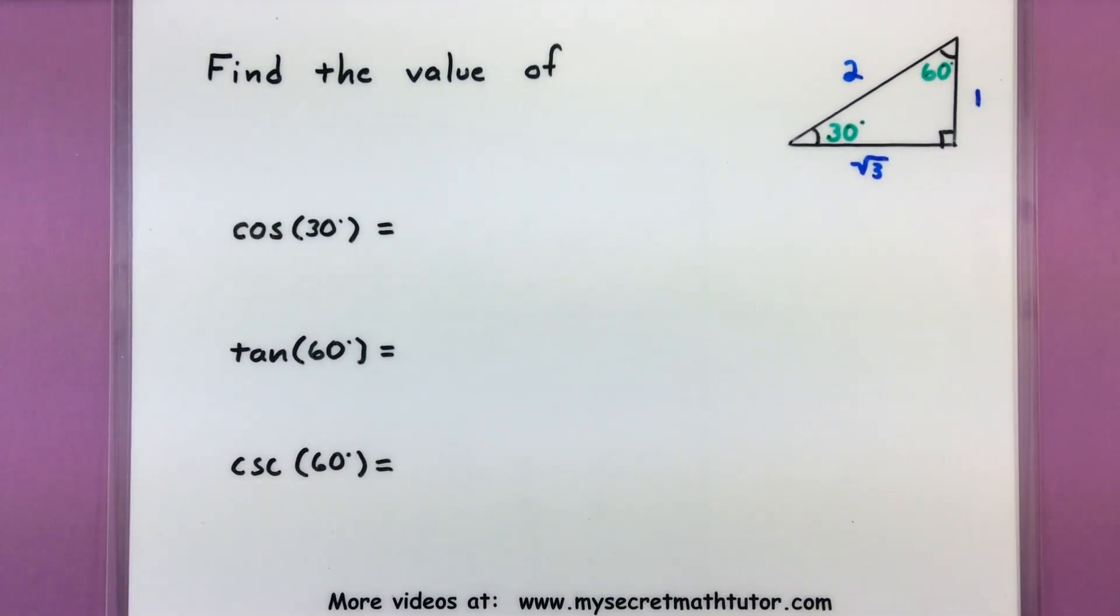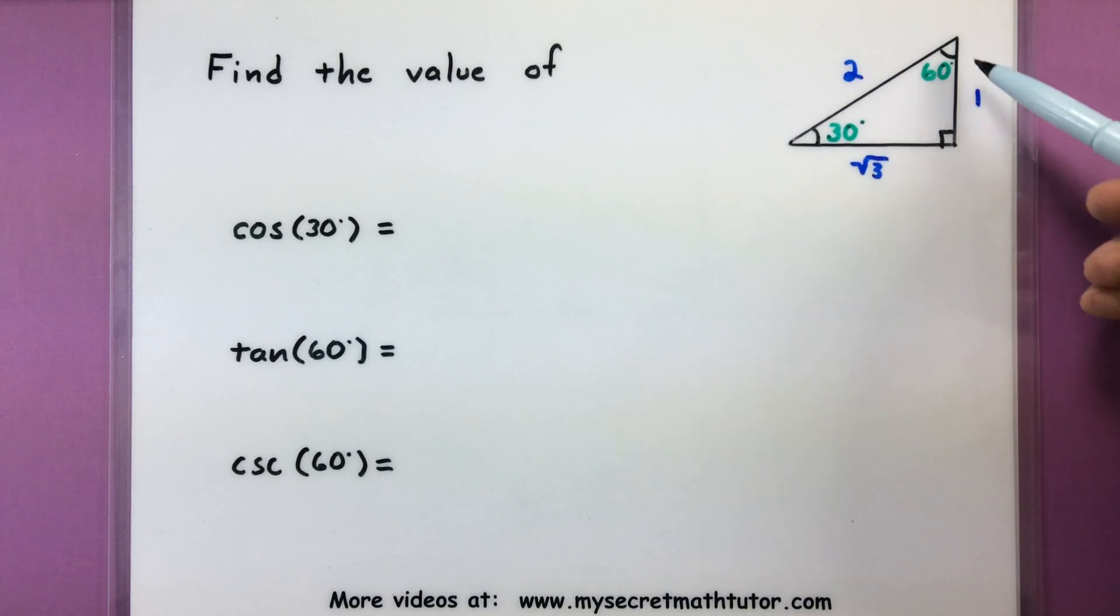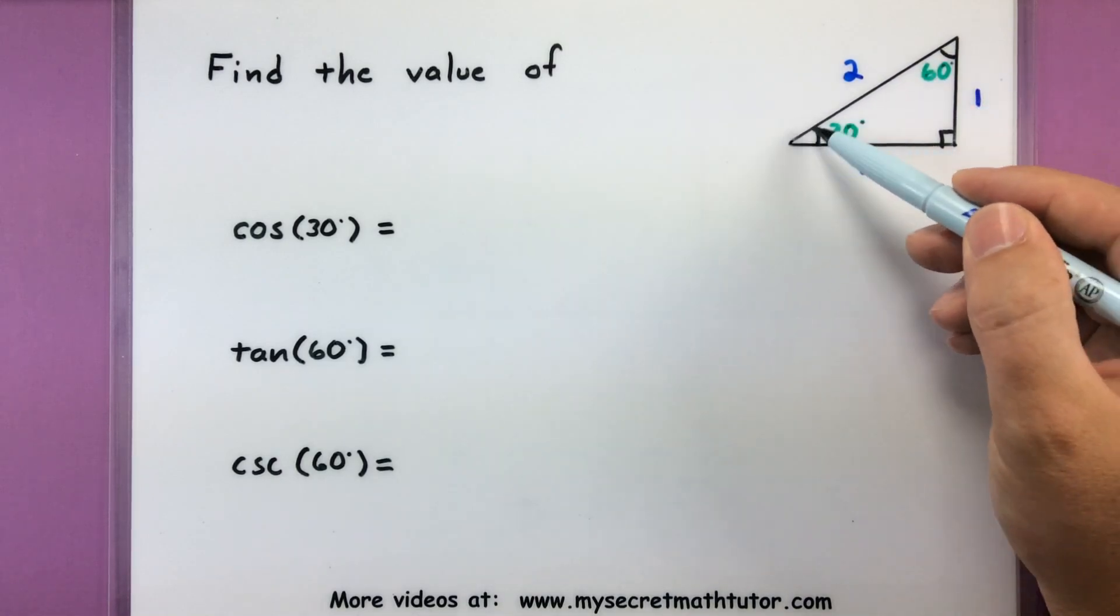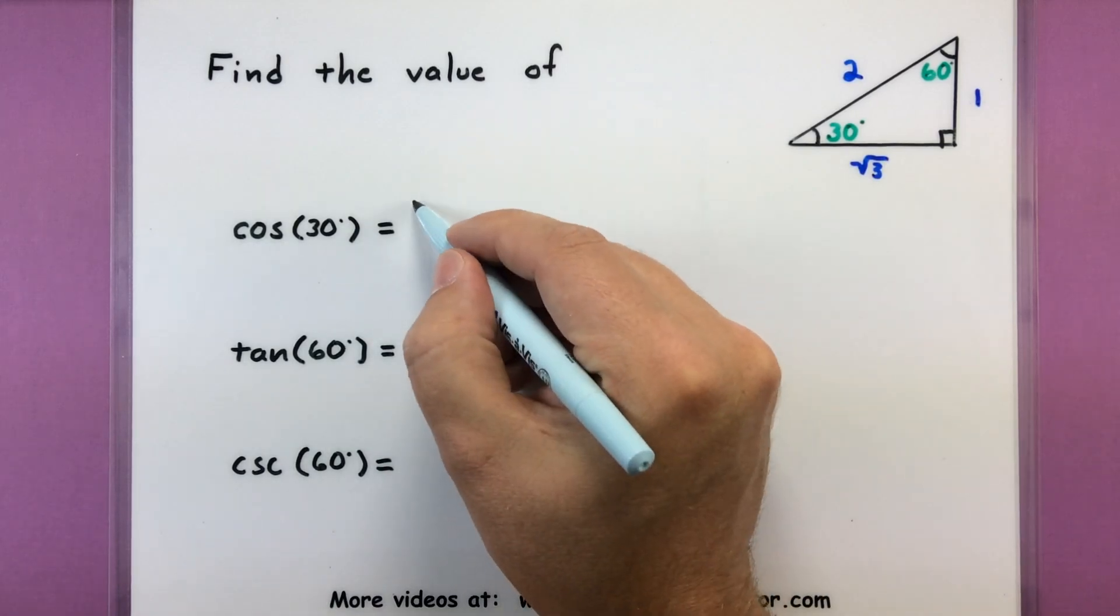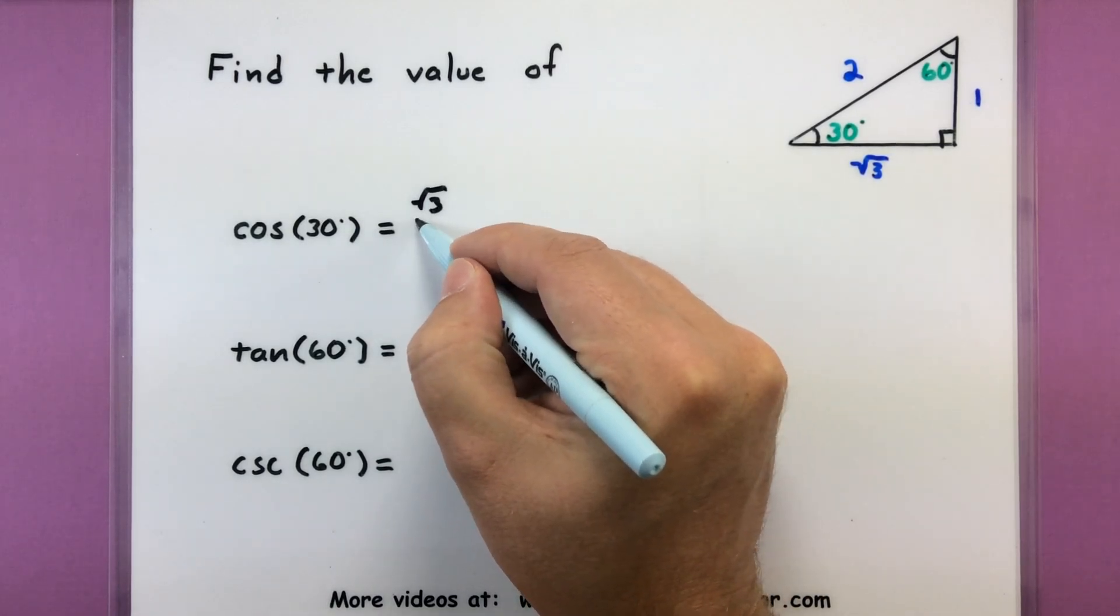We'll start off with trying to find cosine of 30, tangent of 60, and cosecant of 60 degrees. And for this you're going to want to think of that 30-60-90 triangle working in the background. So for cosine of an angle we want to think of the adjacent side over the hypotenuse. When we're thinking about that 30-60-90 and talking about that 30 degrees, I have my adjacent side over the hypotenuse. So this becomes the square root of 3 all over 2.